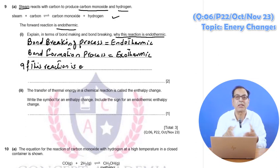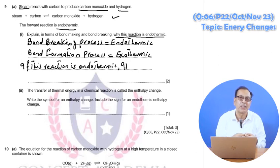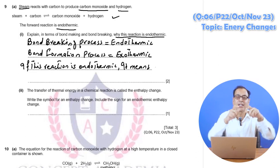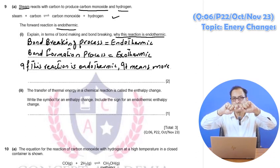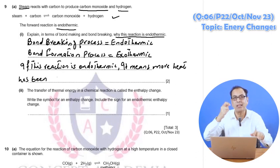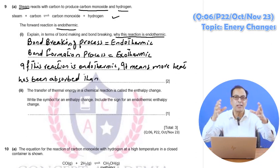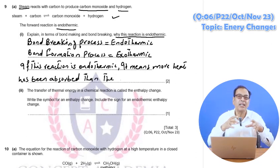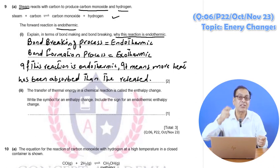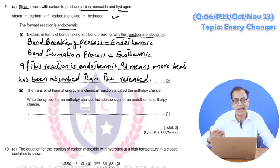Overall the reaction is endothermic because more energy is absorbed during bond breaking compared to the energy released during bond making. So the overall energy absorbed during bond breaking is greater than the energy released during bond making, making the reaction endothermic overall.